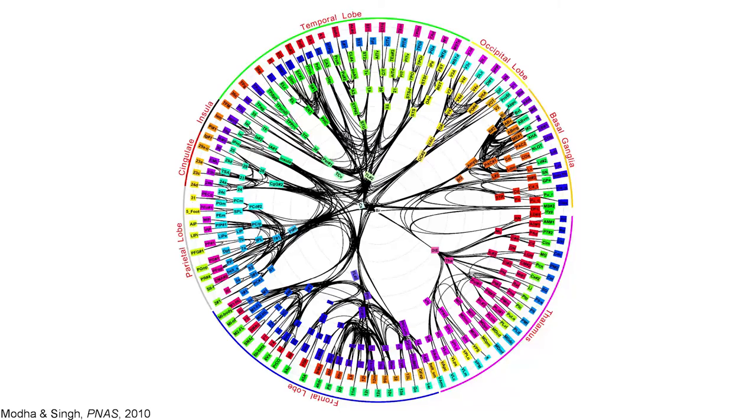There are about 500 distinct brain modules in the human brain — we estimate this based on animal studies — and these are wired together in a complicated interconnected network. On a short time scale, the network is fairly fixed, and your fleeting thoughts all arise by interactions of information through this network.